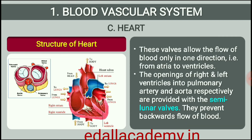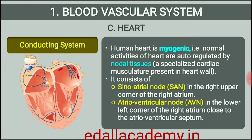The openings of the right and the left ventricles into the pulmonary artery and the aorta respectively are provided with the semilunar valves. The valves in the heart allow the flow of blood only in one direction, that is, from the atria to the ventricles and from the ventricles to the pulmonary artery or aorta. These valves prevent any backward flow. The entire heart is made of cardiac muscles. The walls of ventricles are much thicker than that of the atria.